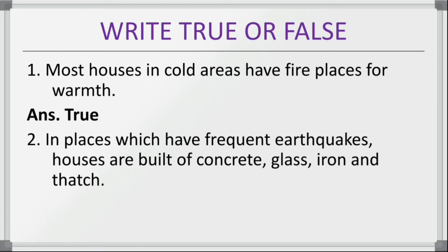In places which have frequent earthquakes, houses are built of concrete, glass, iron and thatch — is it true? No, it is false. Because if houses are made with concrete, glass, iron and thatch and there is an earthquake, it can cause trouble to lives as well as property. There will be loss of life and property.